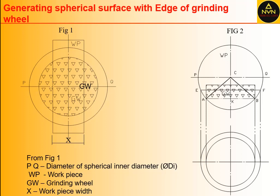There are two figures. From the first figure, WP represents the workpiece, GW represents the grinding wheel, X is the width of the workpiece, and PQ is the diameter of the spherical inner diameter, referred to as DI.